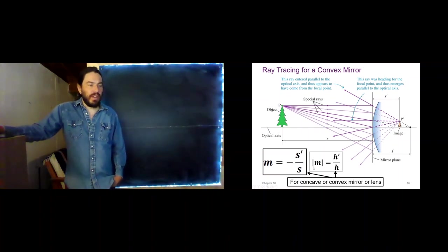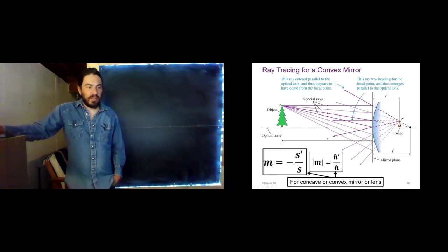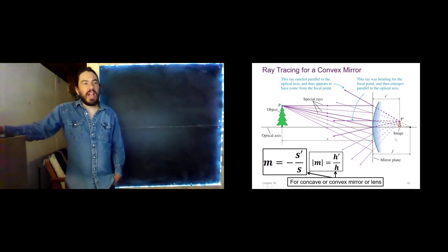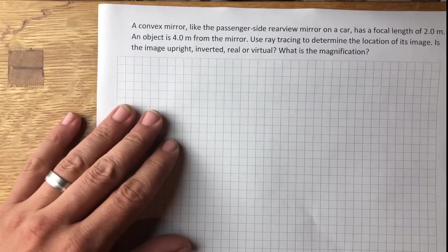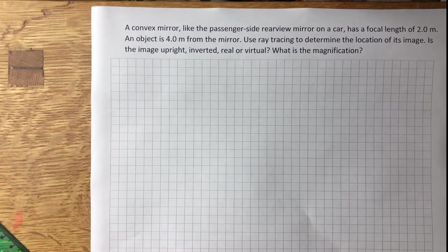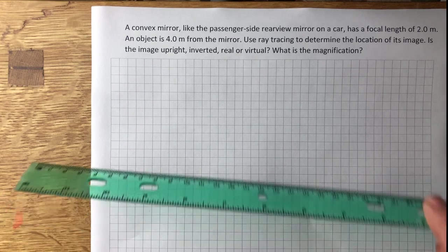We still have the same equations — these work for concave mirrors, convex mirrors, or lenses. We still have our S and our S prime. The sign conventions can get a little tricky — we'll talk more about that in just a second. This example is the convex mirror, like the passenger-side rear-view mirror on a car. It has a focal length of two meters, and an object is four meters from the mirror.